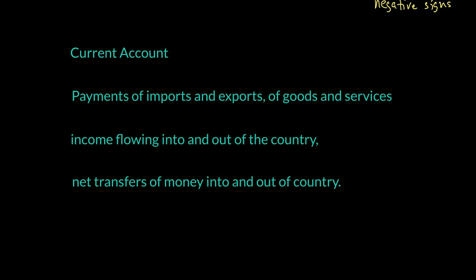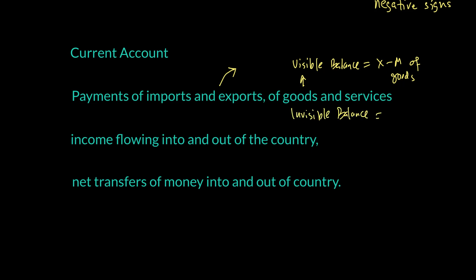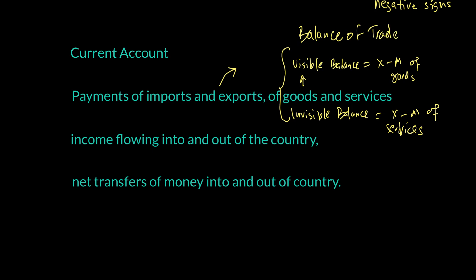When we look at trading goods and services, goods are referred to as the visible balance — that is X minus M of goods. Services are called the invisible balance — X minus M of services. When combined, these give us what we call the balance of trade, which includes both the visible balance and invisible balance of goods and services. This is the first thing we account for in the current account.